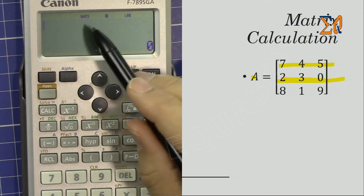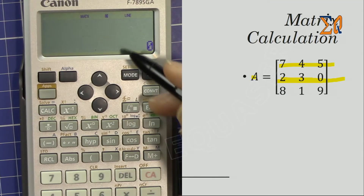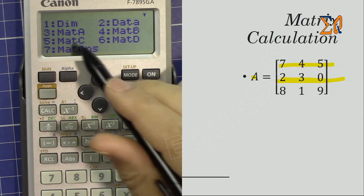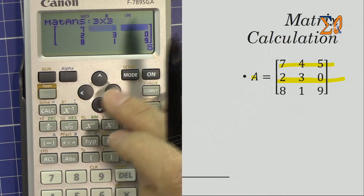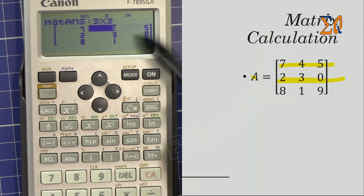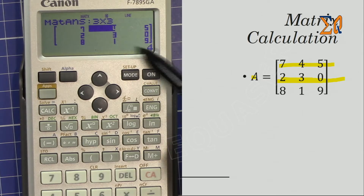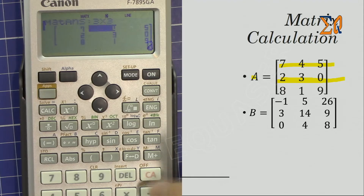Third row: eight, one, nine. When the last value is entered, matrix A is complete. Press clear all — don't worry, the matrix is stored in memory. To recall the matrix, press Apps and then number three to bring matrix A back. Press equal sign to see all values; moving the cursor also displays each cell value, including exact fractional values for decimals.